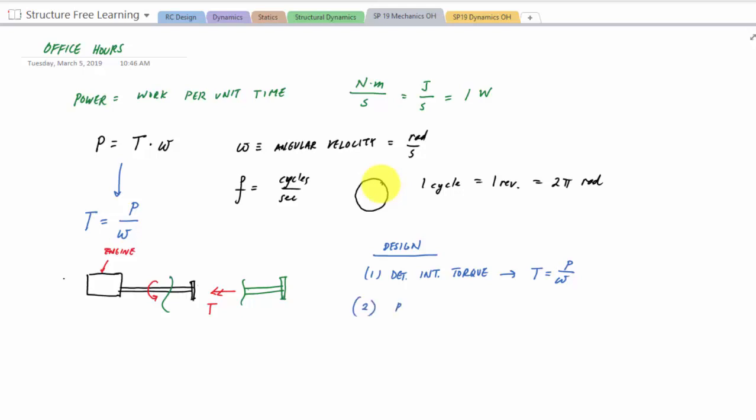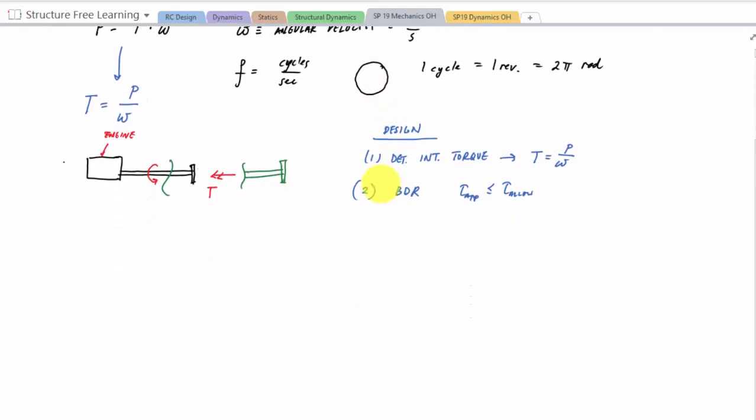We're just going to apply the BDR and that BDR is this tau applied less than or equal to tau allow for the shaft that I'm designing. When is it going to break? And here, because we have torsion, the relationship for this applied shear stress would be T times the outer radius or radius of the shaft divided by J, which would be the polar moment, less than or equal to tau allow.